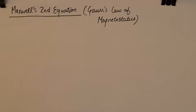Maxwell's second equation is derived from Gauss's law of magnetostatics. It is perhaps the most simplest equation out of the set of Maxwell's four equations. One good thing about this equation is that it does not change its form in any special case — may it be the case of perfect dielectric, may it be the case of free space or any other case. So, pretty straightforward and easy to understand. Let's dive into the derivation of Maxwell's second equation from Gauss's law of magnetostatics.